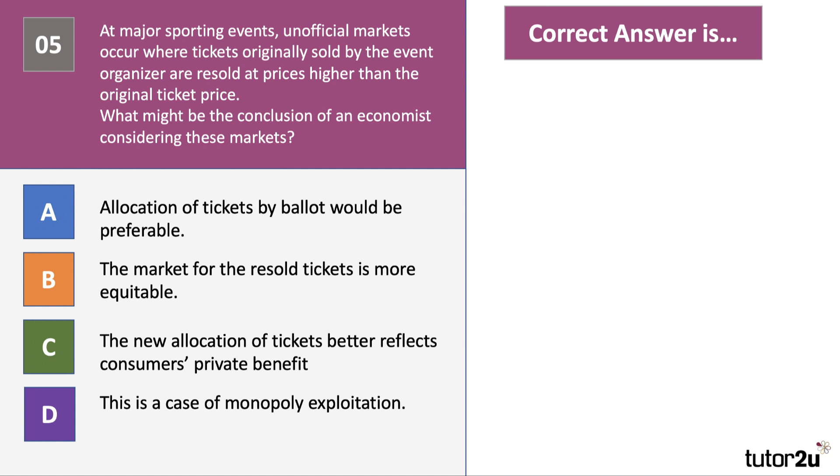Two questions to go. At major sporting events, unofficial markets occur where tickets originally sold by the event organizer are resold at prices higher than the original ticket price. What might be the conclusion of an economist considering these markets? So have a look at the answers there: A, B, C, and D. What do you think the right answer is to question 5?